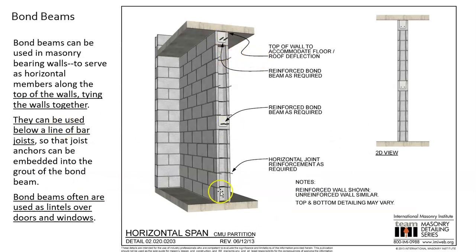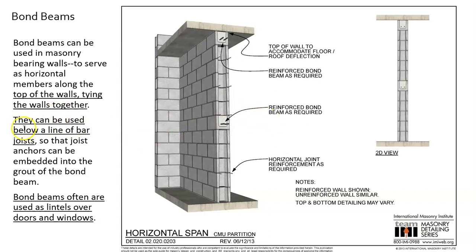Bond beams are used in masonry load-bearing walls and serve as horizontal members, typically along the top of walls, tying the walls together. In the field — in the middle of the wall away from the top, bottom, or bond beam — there is really no continuity, so movement in that direction has not much to resist it. That's why bond beams are brought in: to provide lateral resistance.